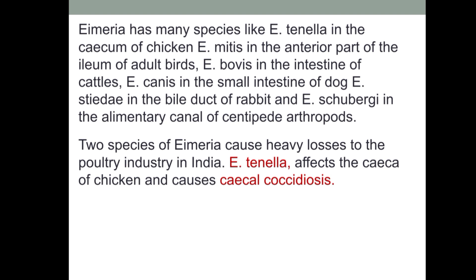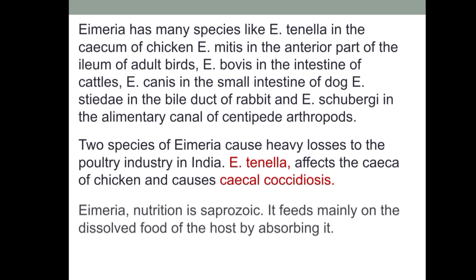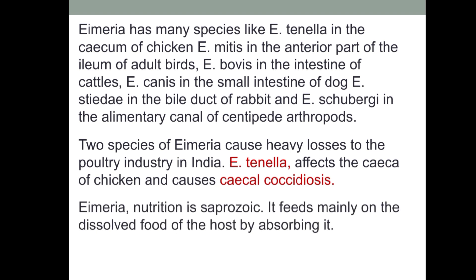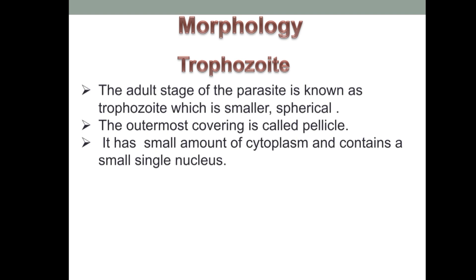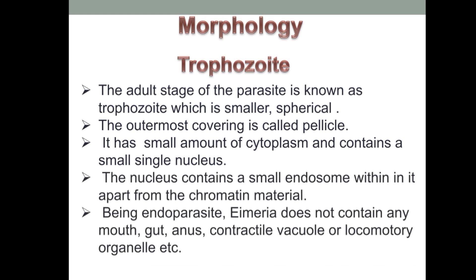Eimeria tenella affects the caeca of chicken and causes caecal coccidiosis. Regarding nutrition, Eimeria is a protozoan that feeds mainly on the dissolved food of the host by absorbing it. The adult stage of the parasite is known as the trophozoite, which is small and spherical. The outermost covering is called the pellicle; it has a small amount of cytoplasm and contains a single small nucleus with an endosome and chromatin material.